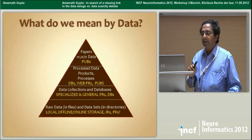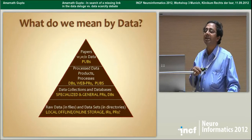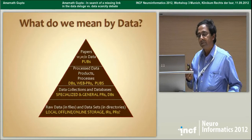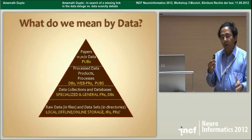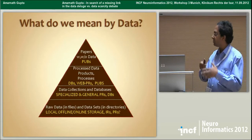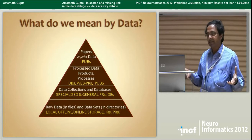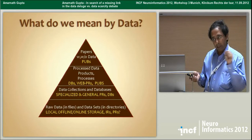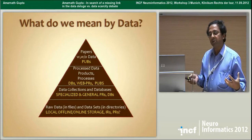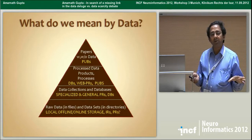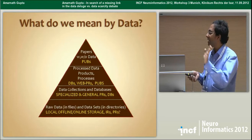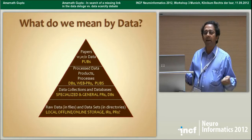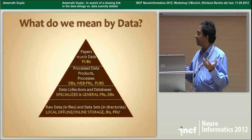Getting closer to publications, there are some data products that people produce by taking some of the data and processing it through one or more workflows, different analyses. These essentially show up in public repositories, but also in databases, in websites just loosely linked.